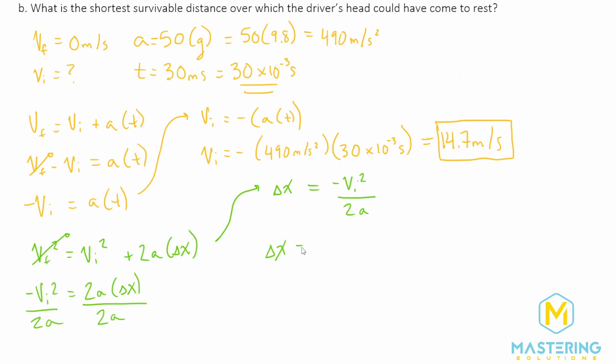And now let's come up here, we have delta x is equal to negative v initial squared divided by 2 times the acceleration. So we have a negative, and this will be negative 490. We said the initial acceleration was 14.7 meters per second. And we'll square that whole value.